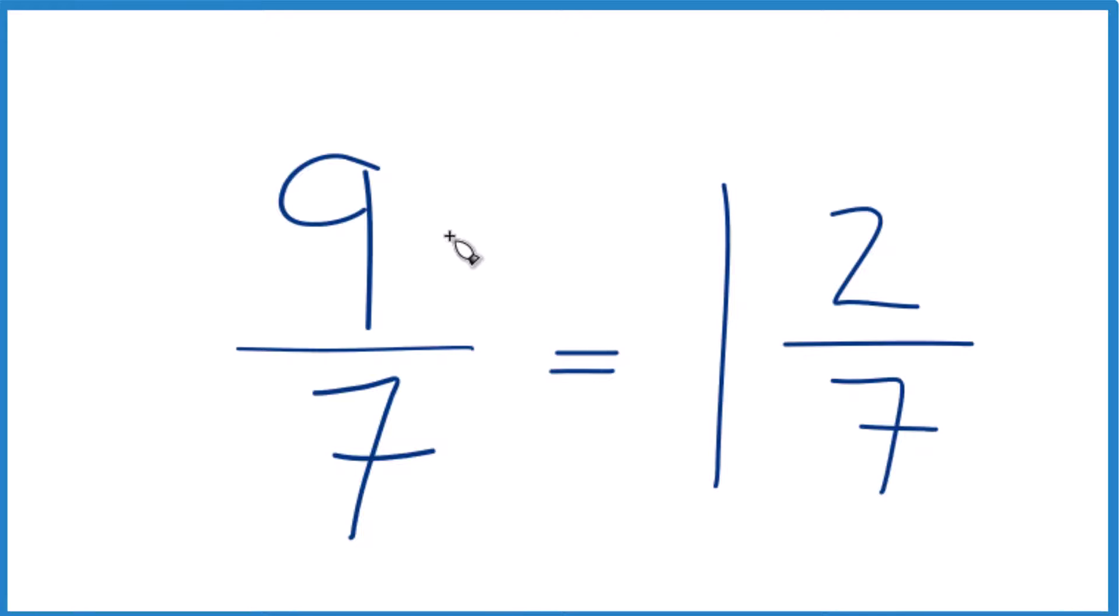And the mixed number that is equal to the improper fraction nine-sevenths is one and two-sevenths. And we can check that. One times seven plus two, that gives us the nine, and we just kept the seven the same, moved it across like that.